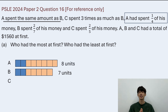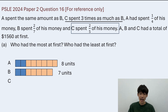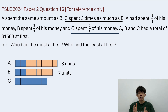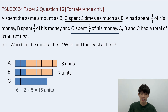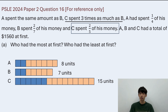Now we're left with C. C spent 3 times as much as B, and C spent 2 over 5 of his money. According to the money spent, it should be 3 times as long as B's money spent, which is the blue part. The blue part has 2 units for B, so C should have 6 units for money spent. And originally C should have 6 divided by 2 times 5, giving a total of 15 units for C.